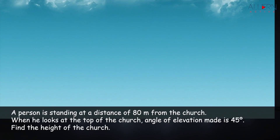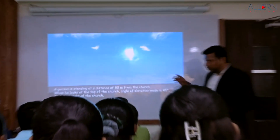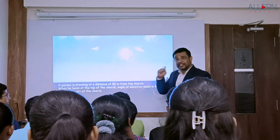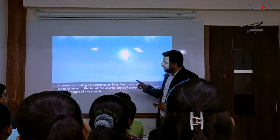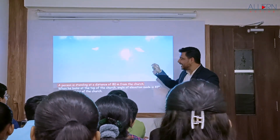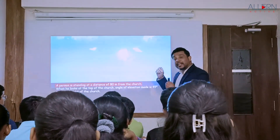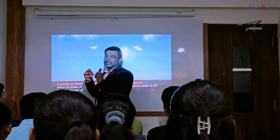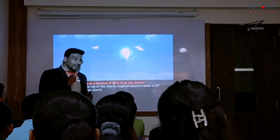We have a beautiful presentation in front of us. Now let's see how a teacher can use this presentation to teach in the classroom effectively. As you have read the sum, first of all let's understand the entire sum in parts. The very first sentence says: the person is standing at a distance of 80 meters from the church. That means we need to have a church and a person.